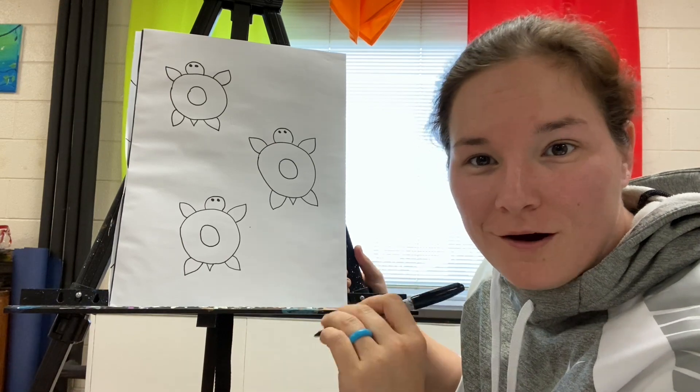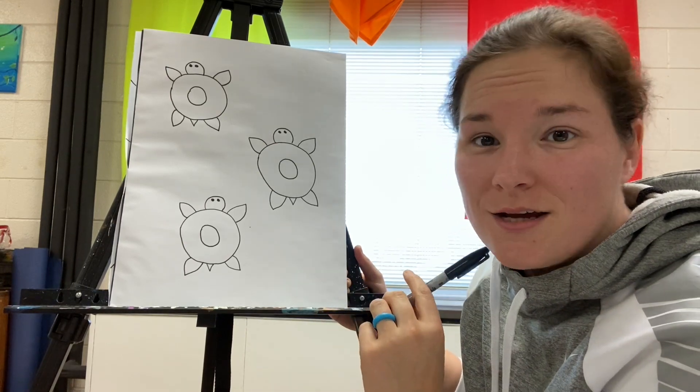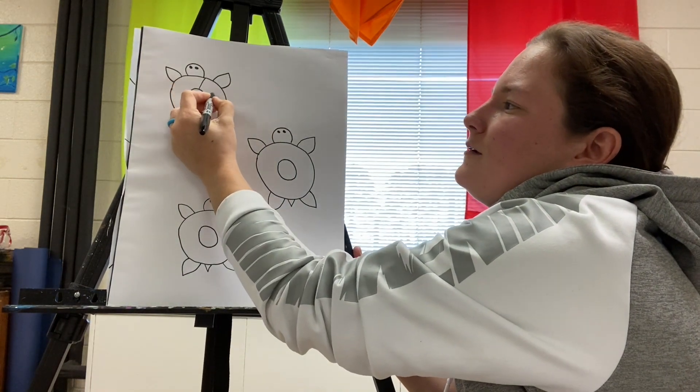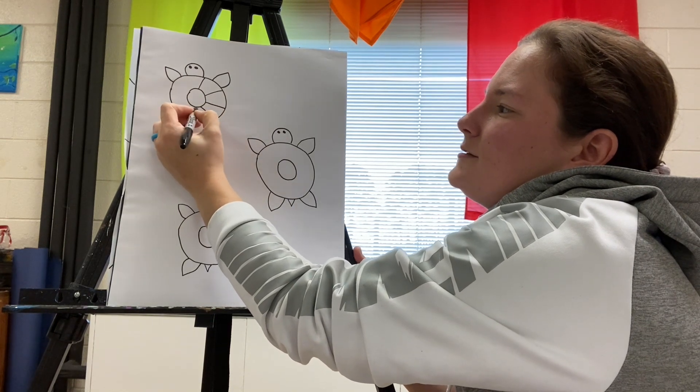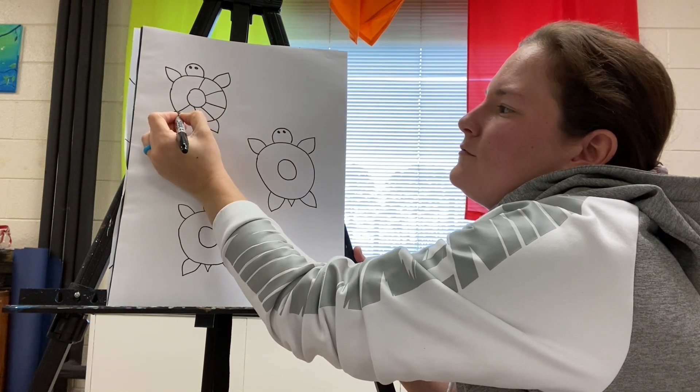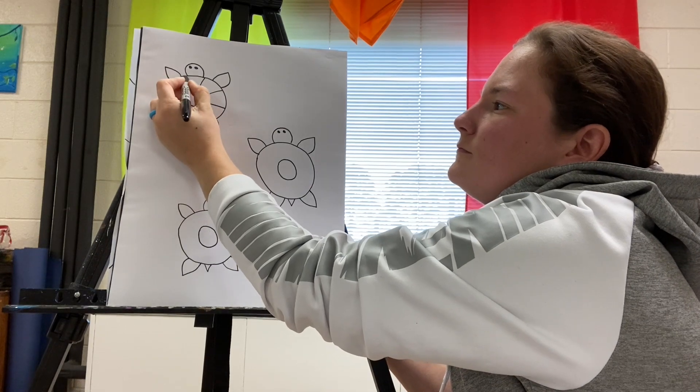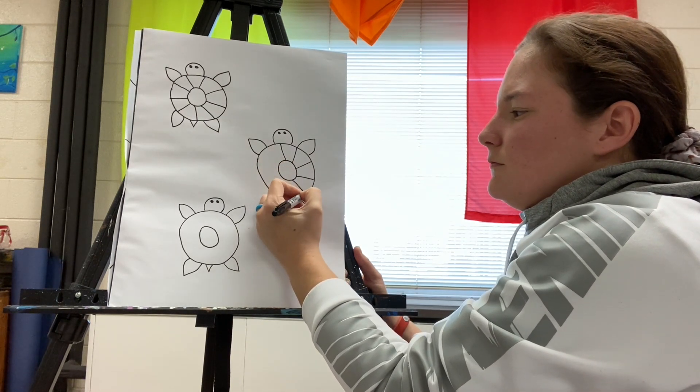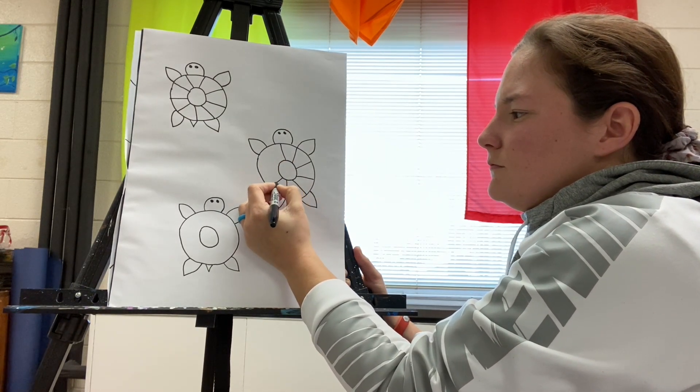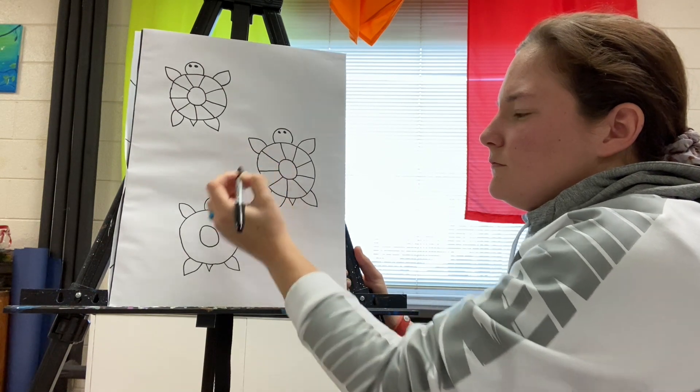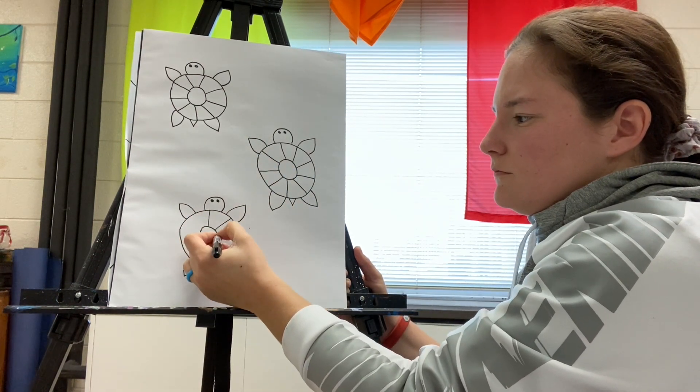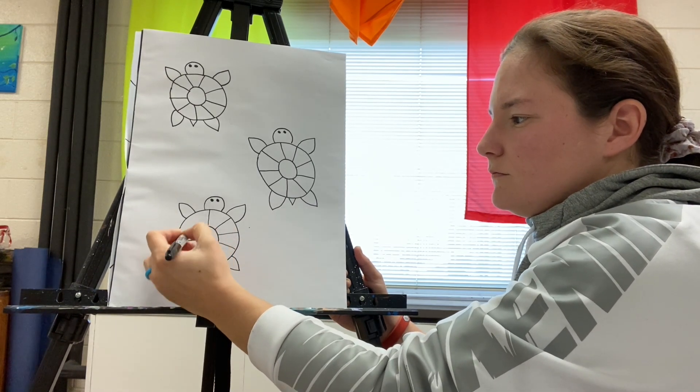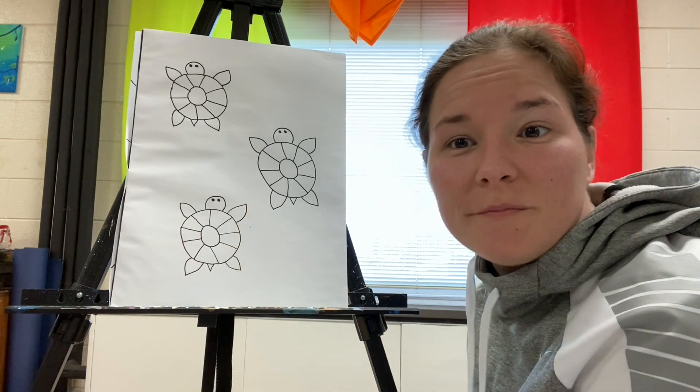But then I'm going to draw lines coming off of this, kind of like a sun. Like a sun ray. Think of it that way. But I'm going to start giving my turtles lines that go around the shell.